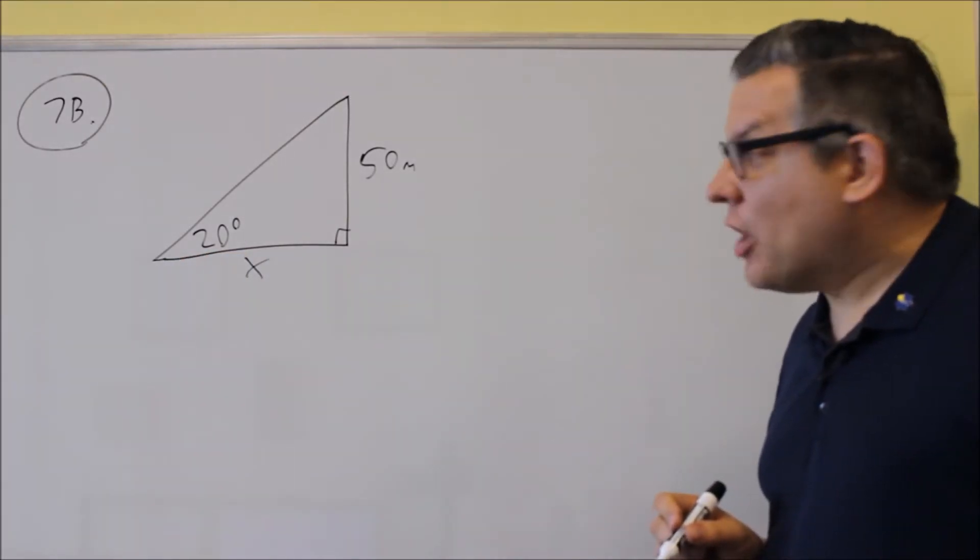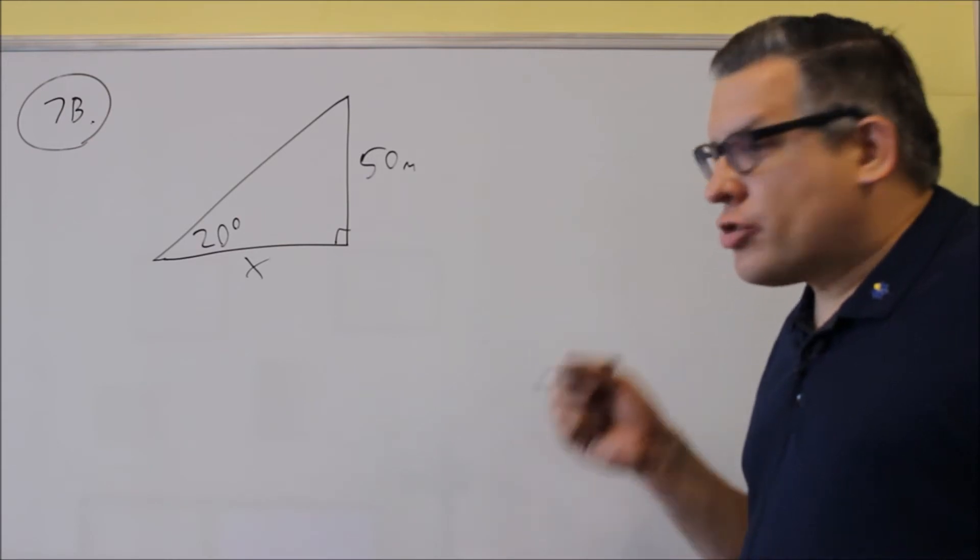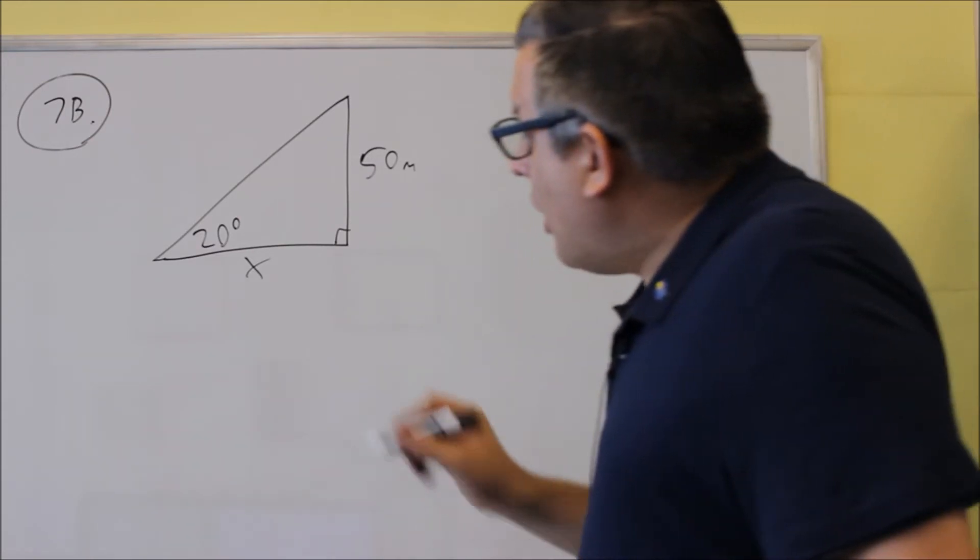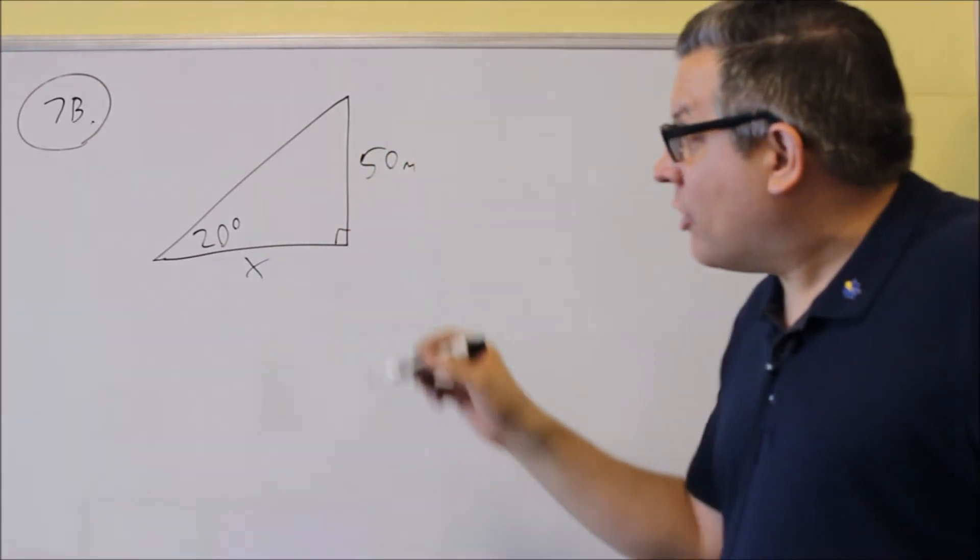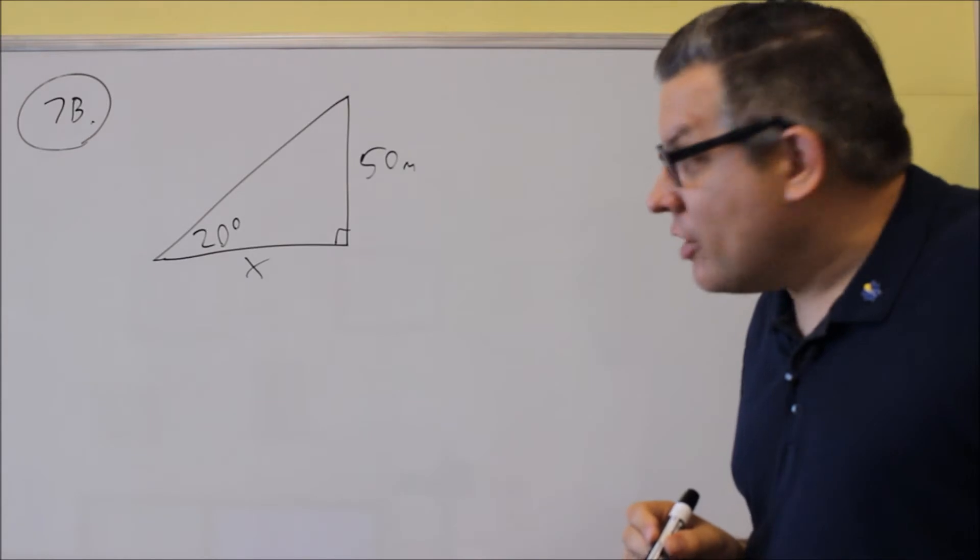So that would be the setup for this problem. We want to pick a trig function that relates all that. Angle of elevation is already measured from the horizontal, so we don't have to subtract anything with that. We can just keep the triangle drawn the way it is.